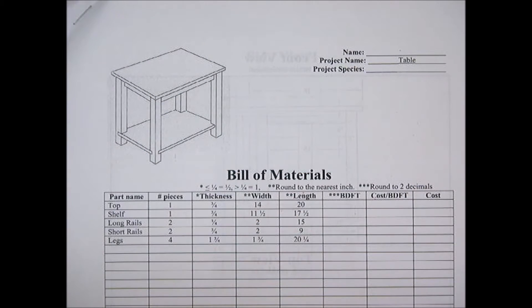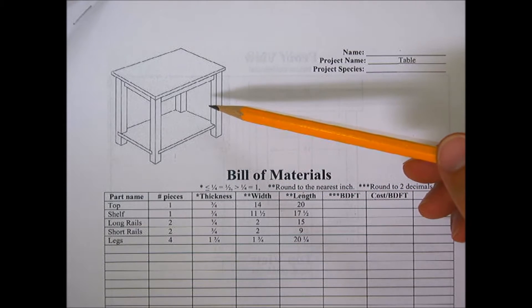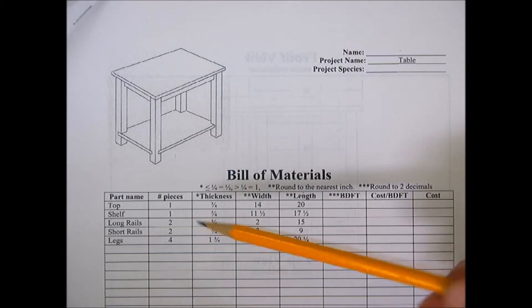So now that you've mastered calculating board feet for different size pieces of wood, let's apply the concept to a whole project. As you can see, we have this bill of materials for the end table. It lists all the parts.